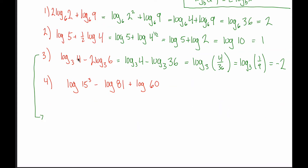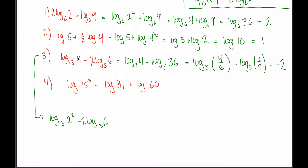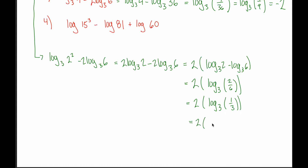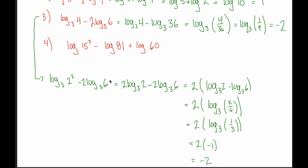It's worth pointing out that this third example could also be done a different way. You could rewrite the 4 as 2 squared, bring that exponent down in front to get 2 times log base 3 of 2 minus 2 times log base 3 of 6. Since there's a 2 on each term, factor it out: 2 times (log base 3 of 2 minus log base 3 of 6). Using the second log rule, that's log base 3 of 2 divided by 6, which is one third. Since 3 to the negative 1 is one third, log base 3 of one third is negative 1. So the answer is 2 times negative 1, which is the same negative 2. I don't think it's as intuitive, but sometimes it helps to see things done in different ways.